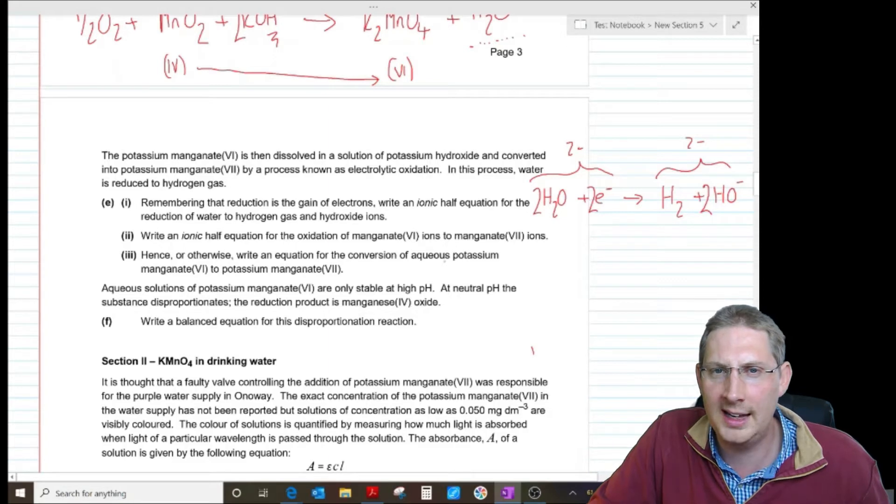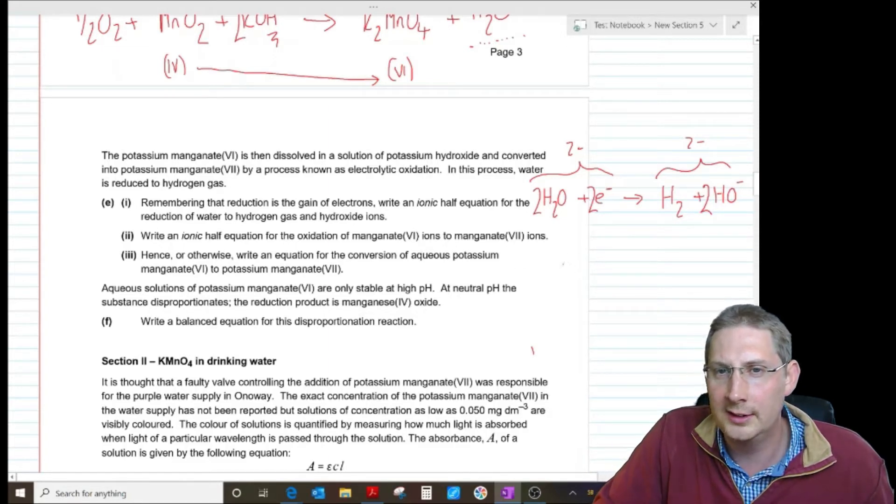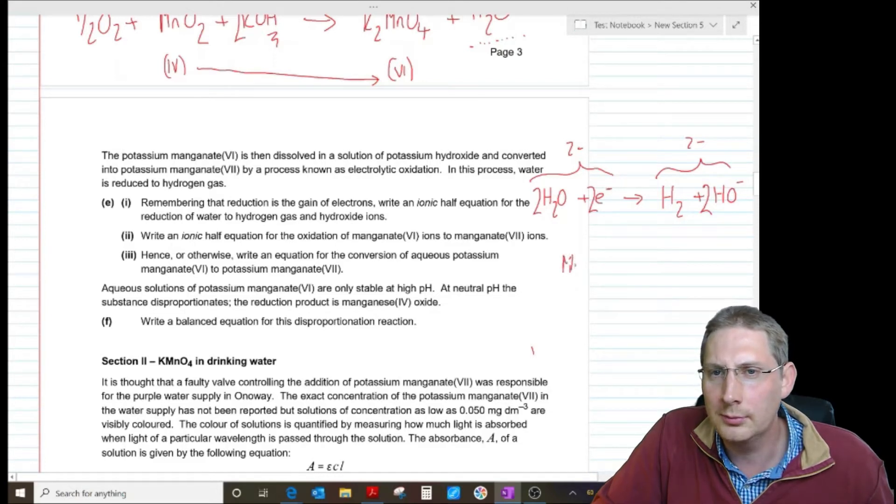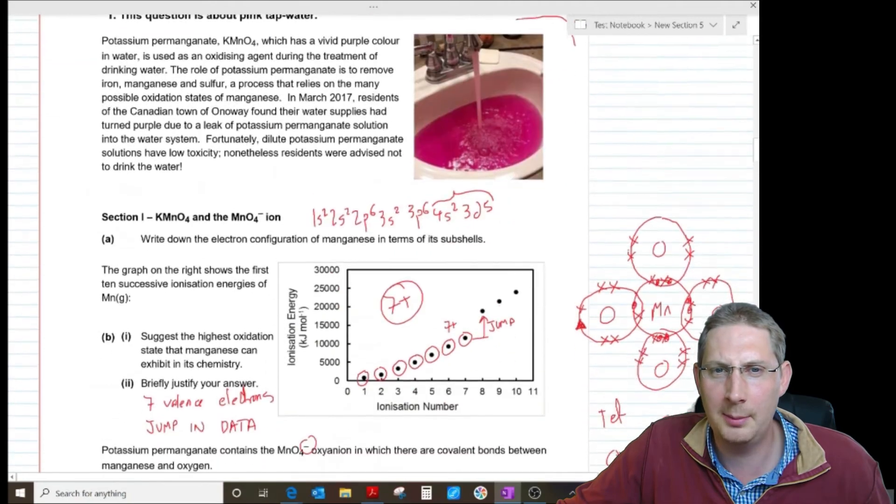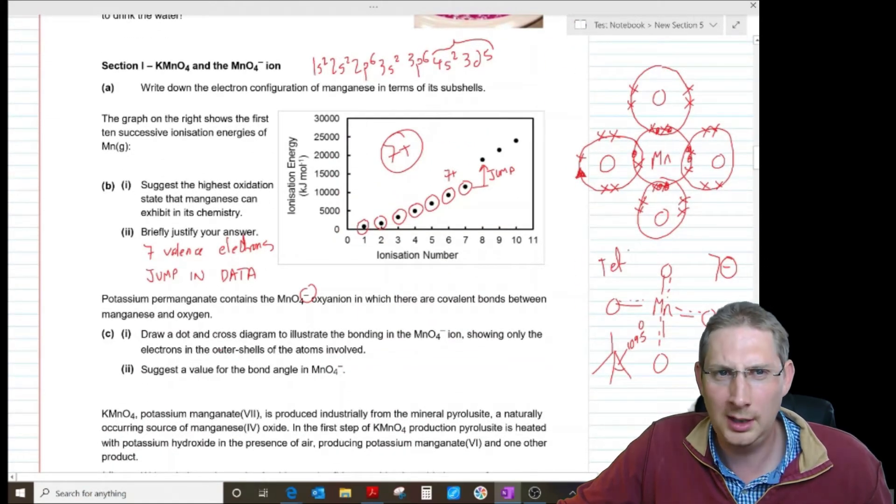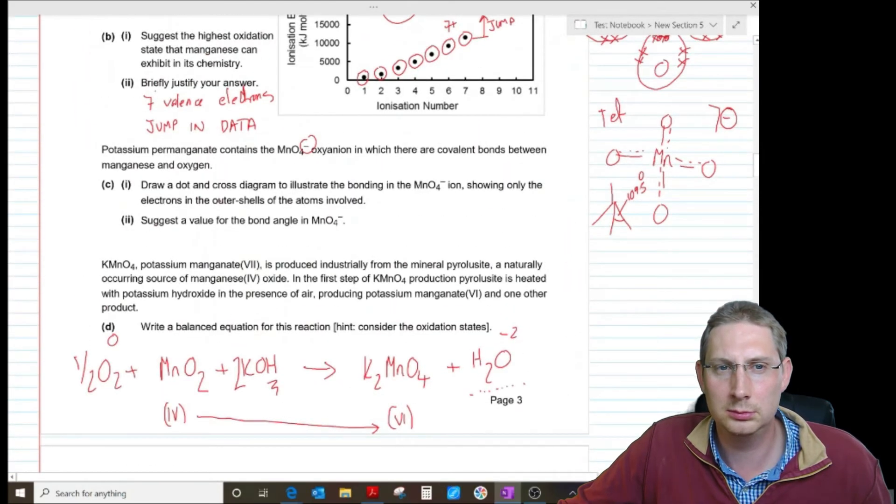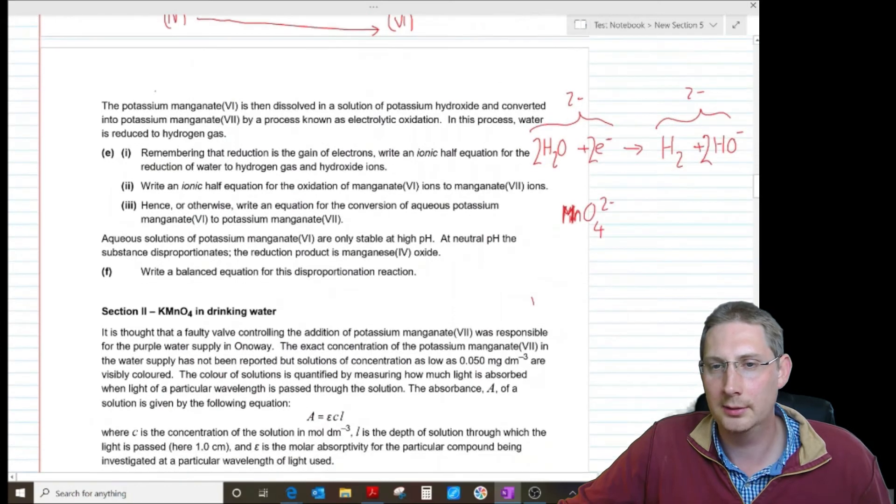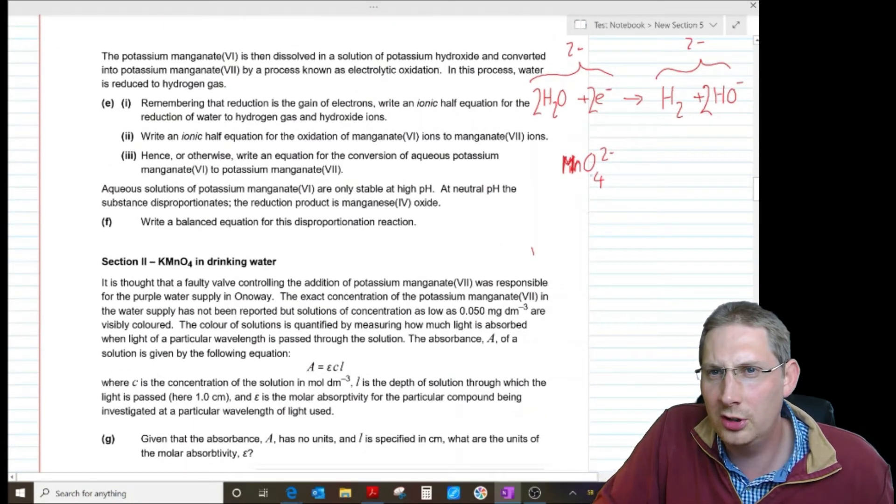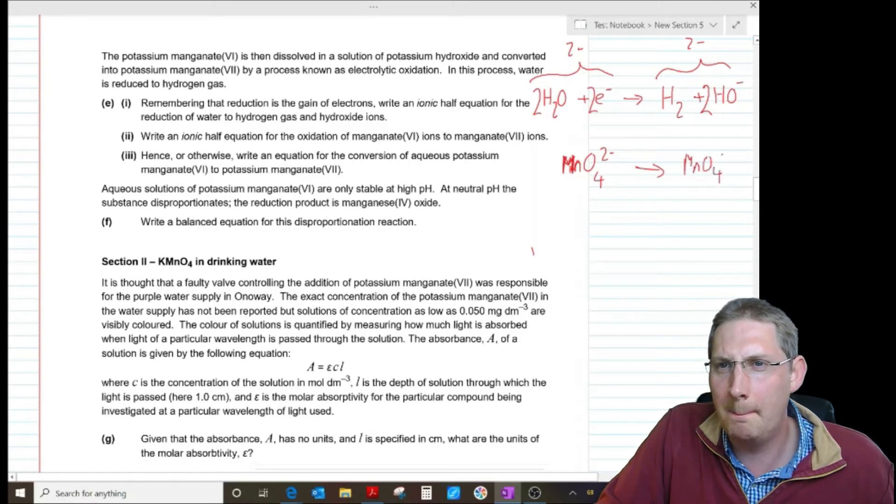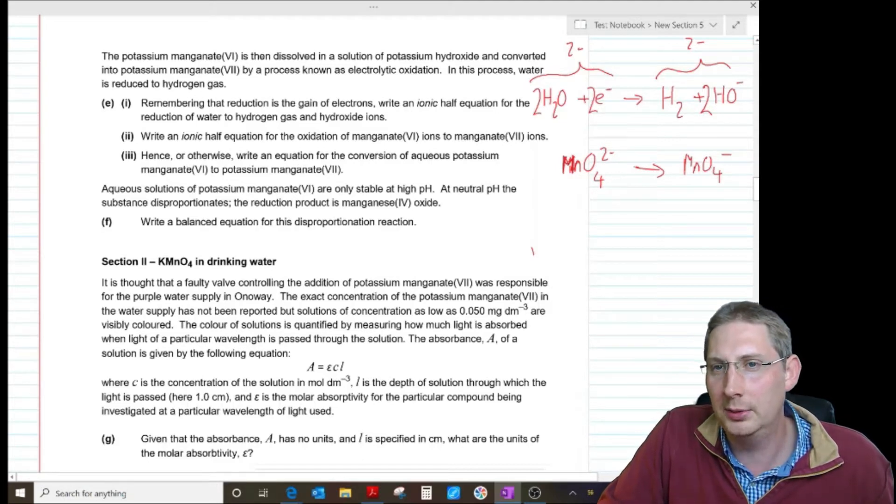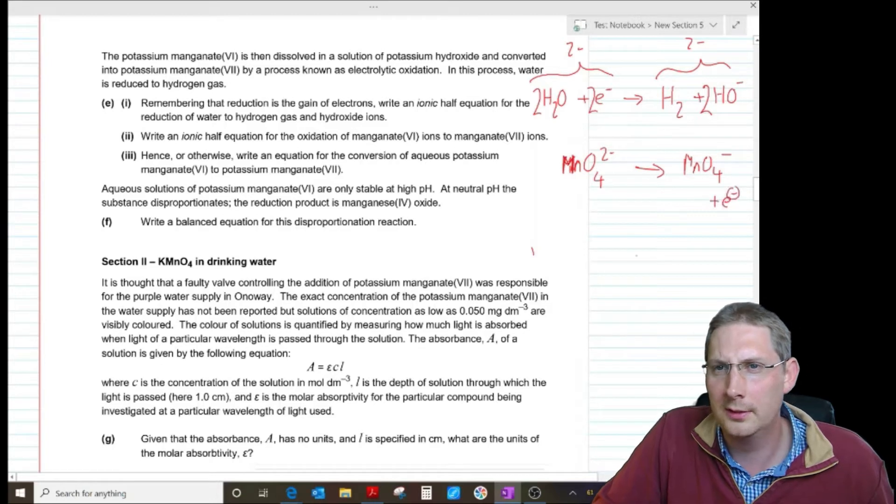Write an ionic half equation for the oxidation of manganate six ions to manganate seven ions. Okay, so manganate six, MnO4 two minus, I think that's what it is. What are we talking about up here? That's manganate seven up there. And we're told potassium manganate six. KMnO4. That is going to... how's that happening? Well, essentially, that must be releasing electron. That's basically it.